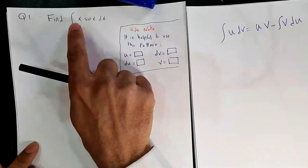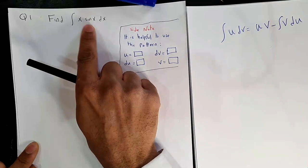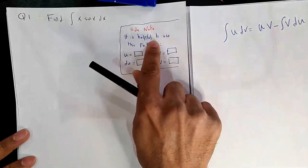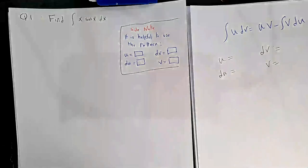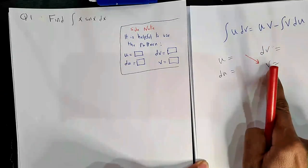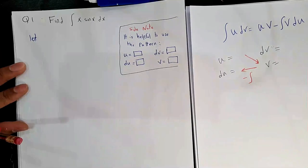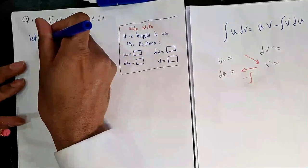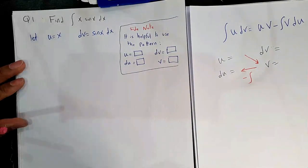Question 1: Find ∫x sin(x) dx. This is a famous example of integration by parts — polynomial times sine, polynomial times cosine, or polynomial times exponential all call for integration by parts. Let us choose u = x (the polynomial) and dv = sin(x)dx. Then du = 1·dx. To find v, we integrate dv: v = −cos(x). Our integral becomes: x·(−cos x) − ∫(−cos x)dx.